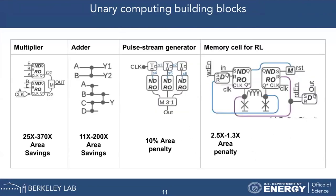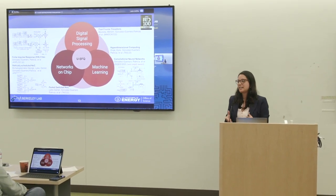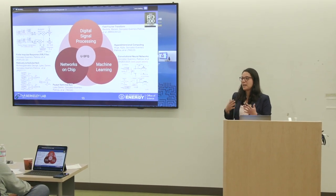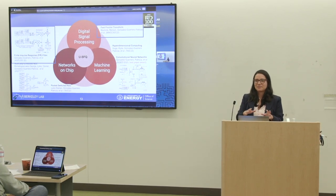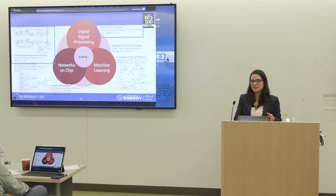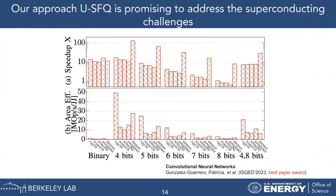I have also built other computing elements: adders, pulse stream generators, and memories — the building blocks to do more interesting things. I looked into digital signal processing, networks on chip, and machine learning, including the architecture for these accelerators. Specifically: fast Fourier transforms, finite impulse response filters, hyperdimensional computing, and convolutional neural networks.